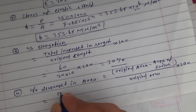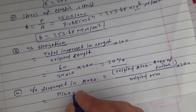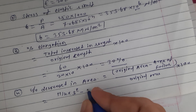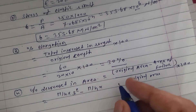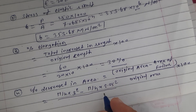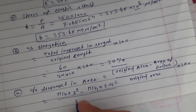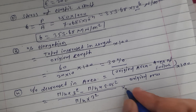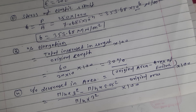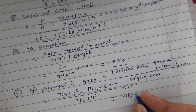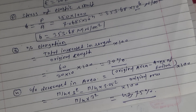Putting in the values: pi by 4 into 3 square minus pi by 4 into 2.25 square, divided by pi by 4 into 3 square, into 100. When you calculate, you will get 43.75%. This is the percentage reduction in area.